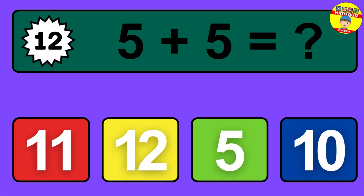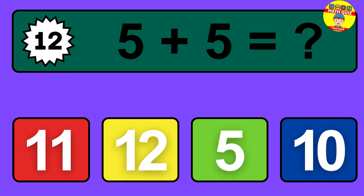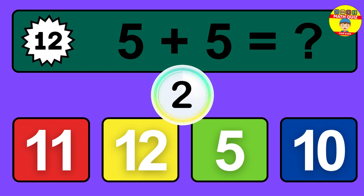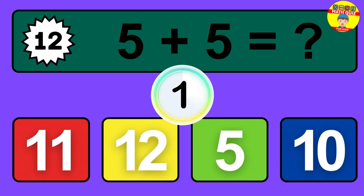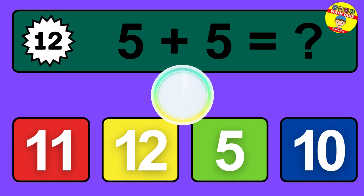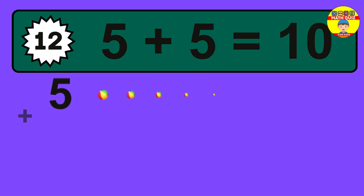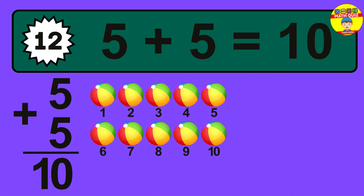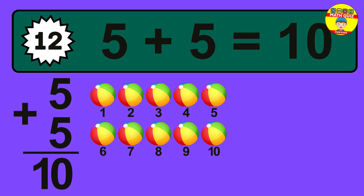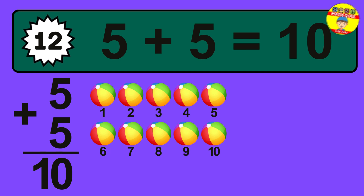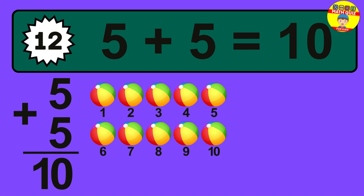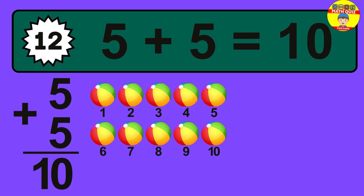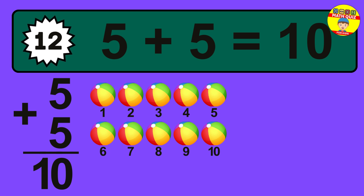Question 11. 6 plus 4 equals what? The answer is 6 plus 4 is 10. Let's count it: 1, 2, 3, 4, 5, 6, 7, 8, 9, 10. Question 12. 5 plus 5 equals what? The answer is 5 plus 5 is 10. Let's count it: 1, 2, 3, 4, 5, 6, 7, 8, 9, 10.